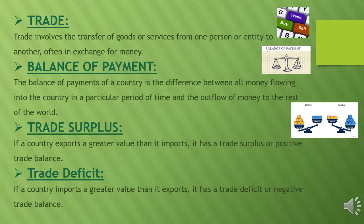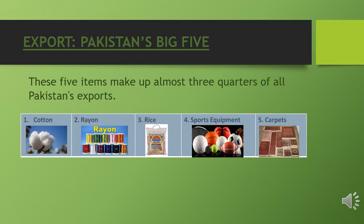Trade Deficit: if a country imports a greater value than it exports, it has a trade deficit or negative trade balance. Exports — Pakistan's Big Five: as we already discussed in our previous lectures, these five items make up almost three quarters of all Pakistan's exports. These are cotton, rayon, rice, sports equipment, and carpets.